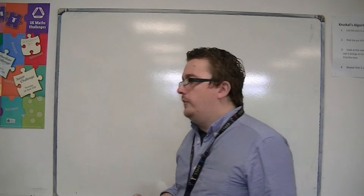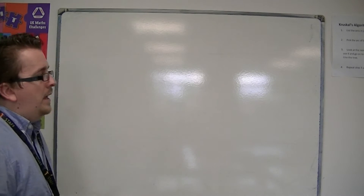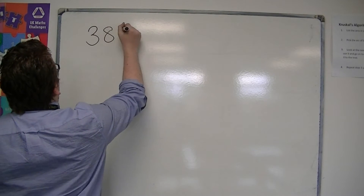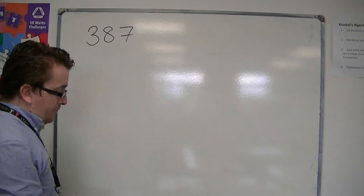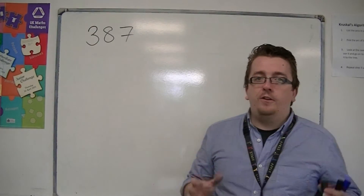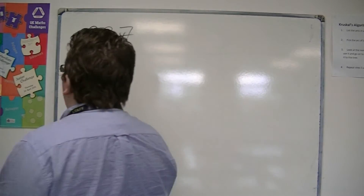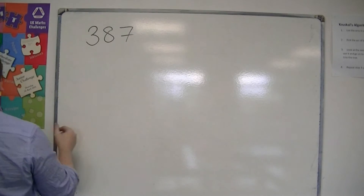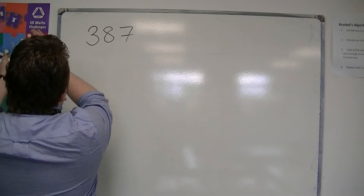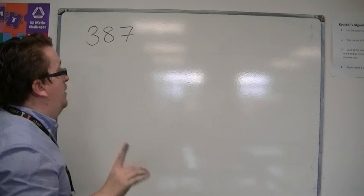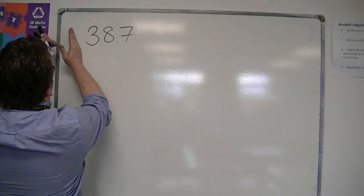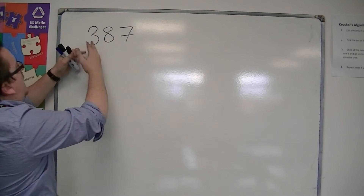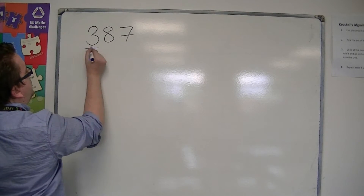Significant figures is very similar. The best way to do it is to start with an example. So I'm going to look at 387. If I'm going to round to one significant figure, then you look from left to right. You ignore anything that comes before that are zeros, and then I hit the three — and that is my first significant figure.